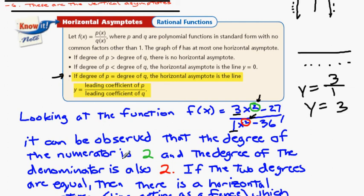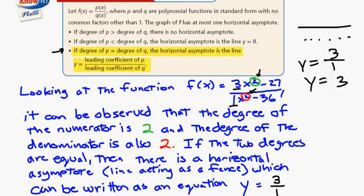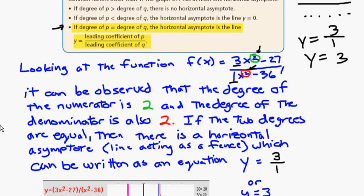It can be observed that the degree of numerator is 2, so is the degree of the denominator. If the two degrees are equal, then there is a horizontal asymptote line acting as a fence, which can be written as an equation, y equals 3 over 1, which is equal to 3.